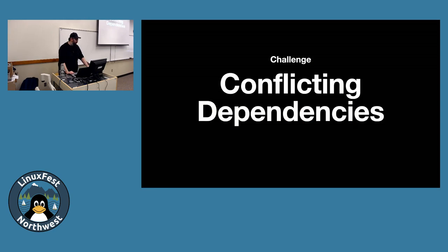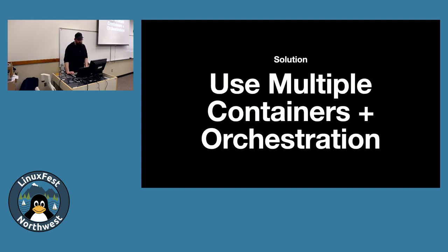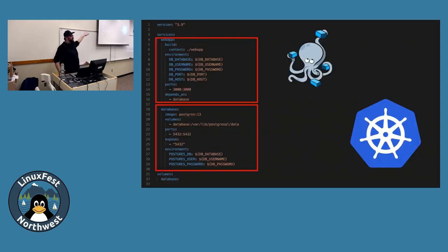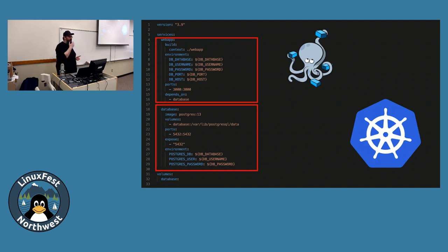Another problem: conflicting dependencies—that DLL hell, or needing Python 2 and Python 3, or two versions of MySQL. The solution: multiple containers plus an orchestration tool. The big scary one is Kubernetes, but Docker Inc. also makes Docker Compose—a YAML file where you define your services. You can break things out into individual pieces; different services that need different dependencies just get different containers. You can create virtually unlimited containers, and you're not emulating hardware, which makes this much, much faster.